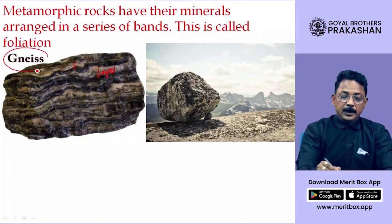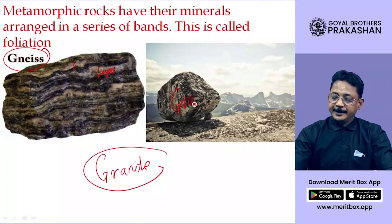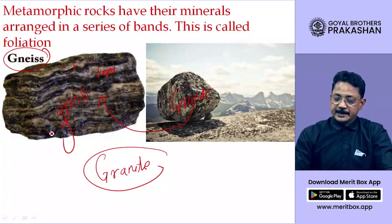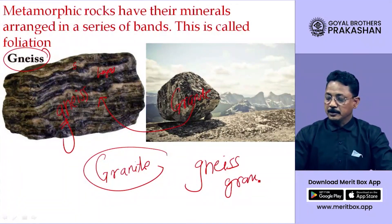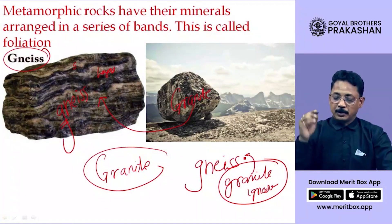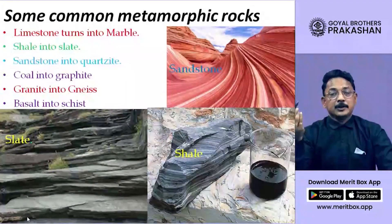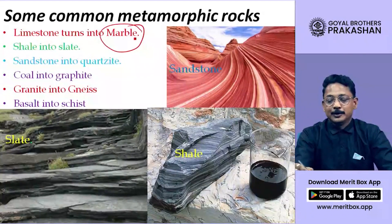Granite is an igneous rock that gets converted into a new metamorphic rock called gneiss — here the G is silent. Gneiss is a metamorphic rock formed from granite. Limestone, which I told you about earlier, because of metamorphism gets converted into marble. Marble is that very beautiful rock used for making the Taj Mahal — the Taj Mahal building is made out of marble, so marble is a very precious metamorphic rock.